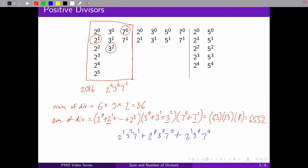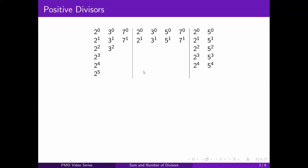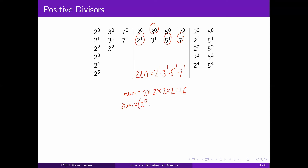Let's look at two more examples. The one in the middle is for 210 — which is 2 raised to 1 times 3 raised to 1 times 5 raised to 1 times 7 raised to 1. How many divisors does 210 have? The number of divisors is the number of ways to choose one number from each column. That's 2 times 2 times 2 times 2 because you have two choices in each column, giving you 16. The sum of divisors is (2⁰ + 2¹)(3⁰ + 3¹)(5⁰ + 5¹)(7⁰ + 7¹) = 3 times 4 times 6 times 8, which is 576.